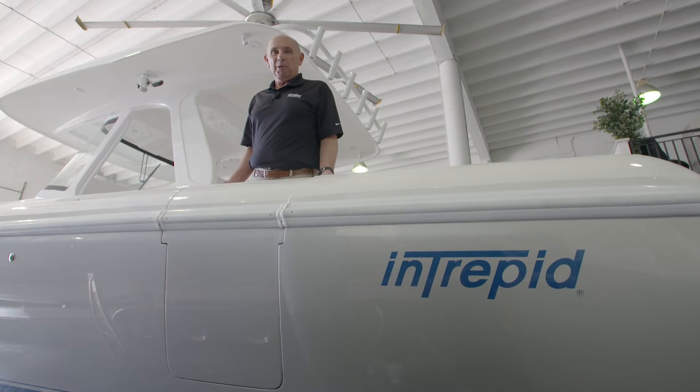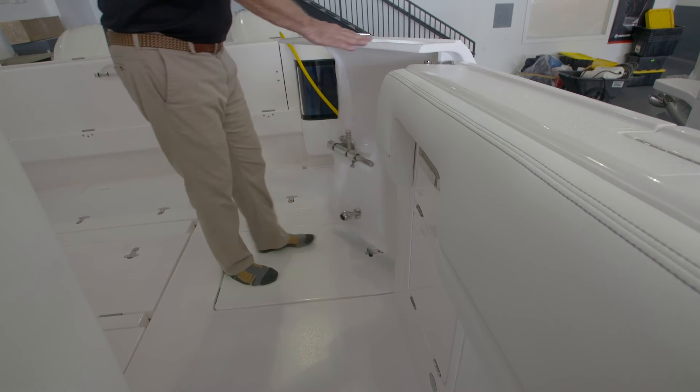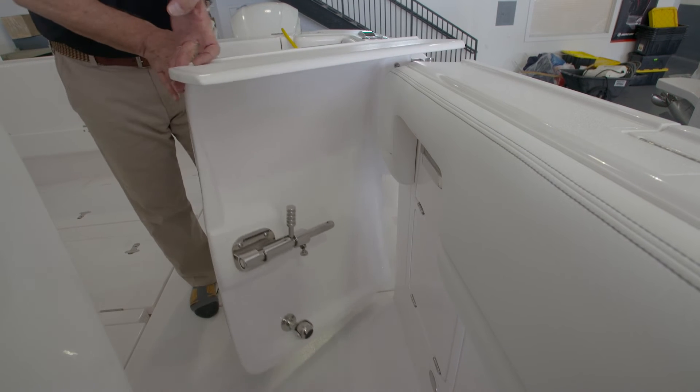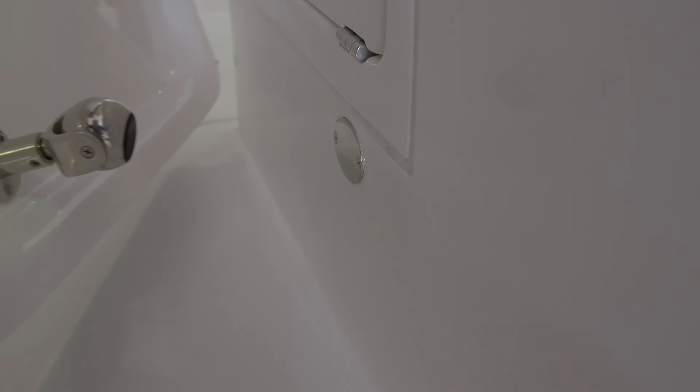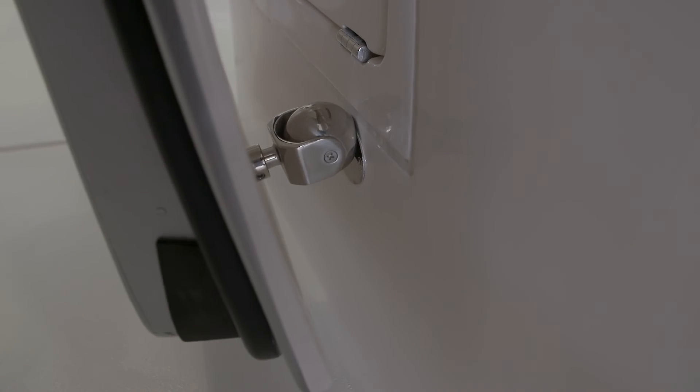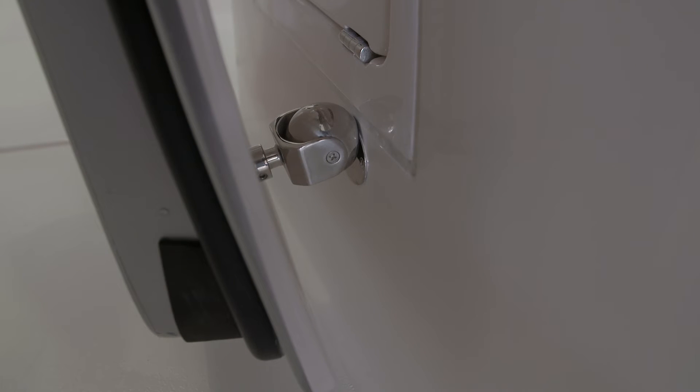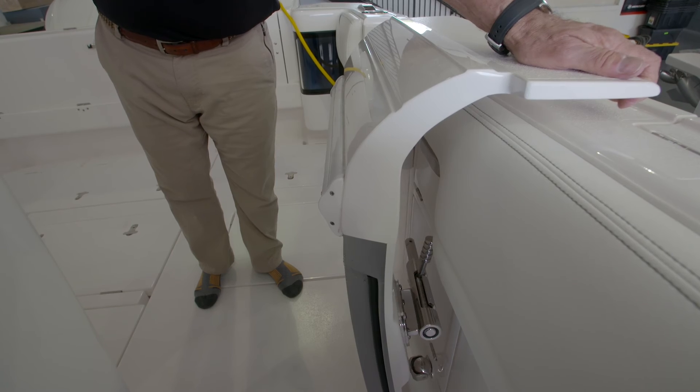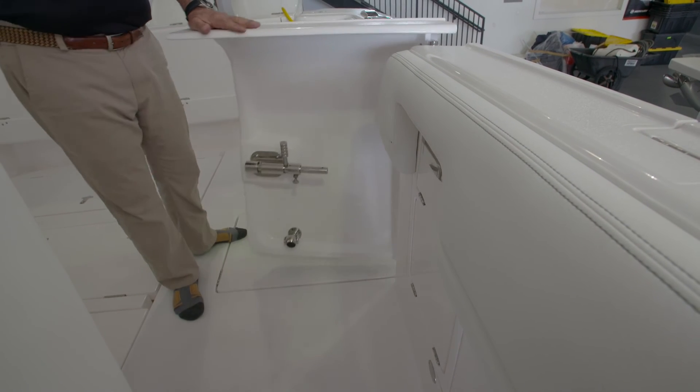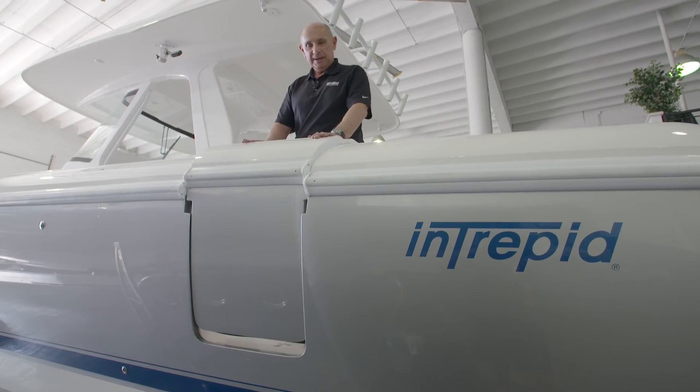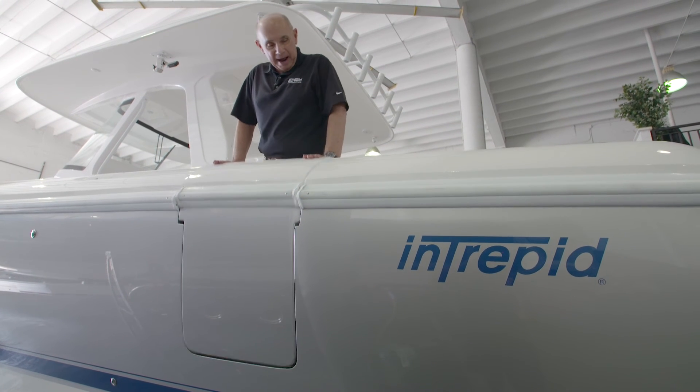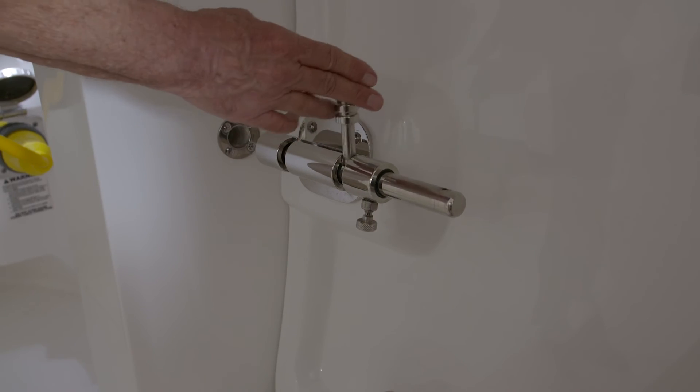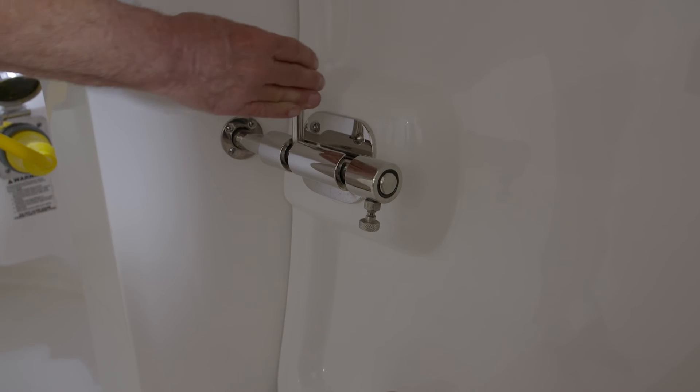Next, you'll pull up on the door to pop it up, then you can swing it open and allow the magnetic catch on its base to catch and hold the door open. To close the door, you'll swing it outboard, push it down, and then latch the latch on the inside.